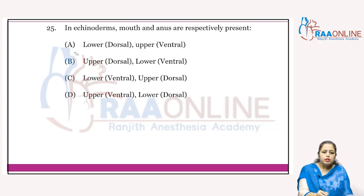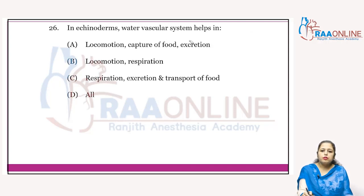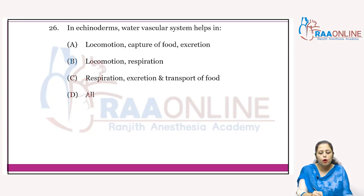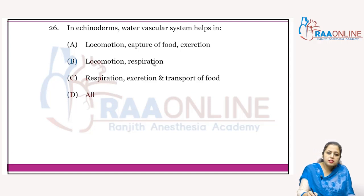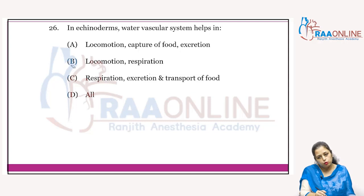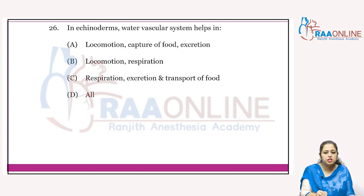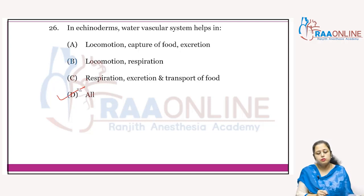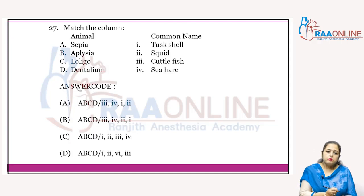In echinoderms, the mouth is on the lower (ventral) side and the anus is on the upper (dorsal) side — answer is C. The water vascular system in echinoderms helps in locomotion, capture of food, respiration, transportation of food, and excretion — it helps in all these functions. Answer is D.